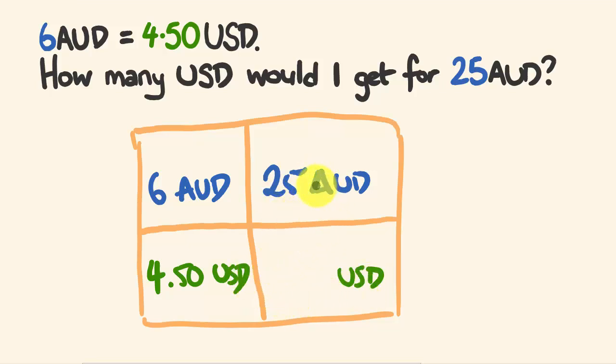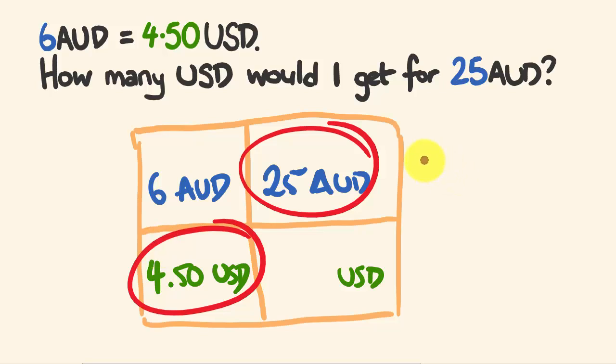Now, it's fairly simple what we do now. What we're going to do is we're going to multiply these diagonals here, the ones that are filled in. So we're going to multiply those guys and divide by the other ones. So we're going to multiply these guys. Alright, this is 25 times 4.50, and then we divide by this one. Okay, divided by 6.